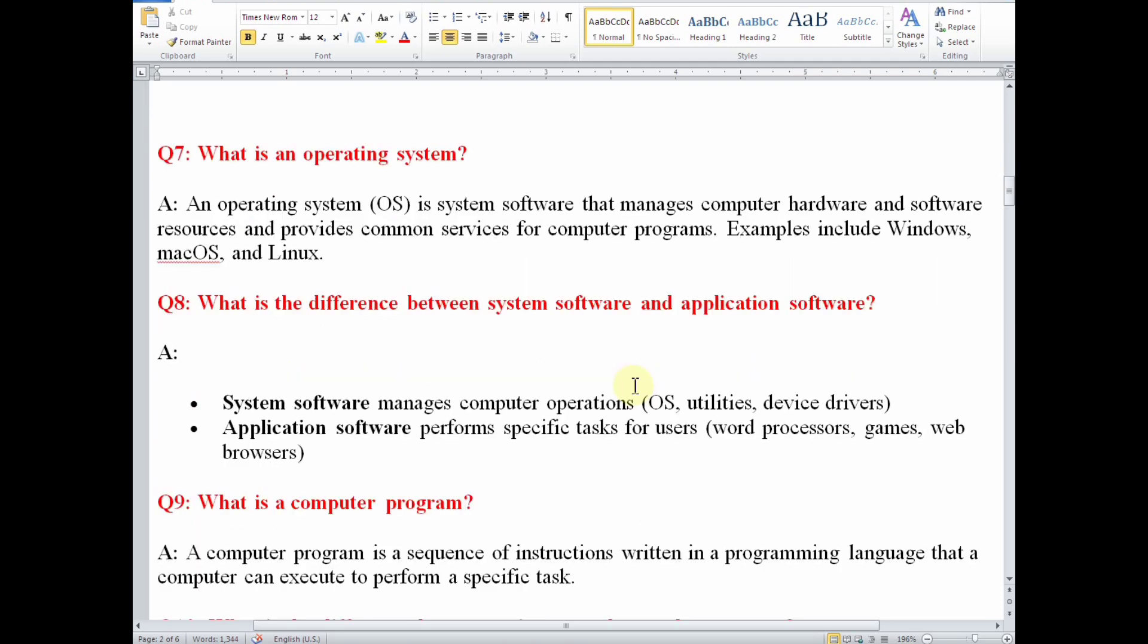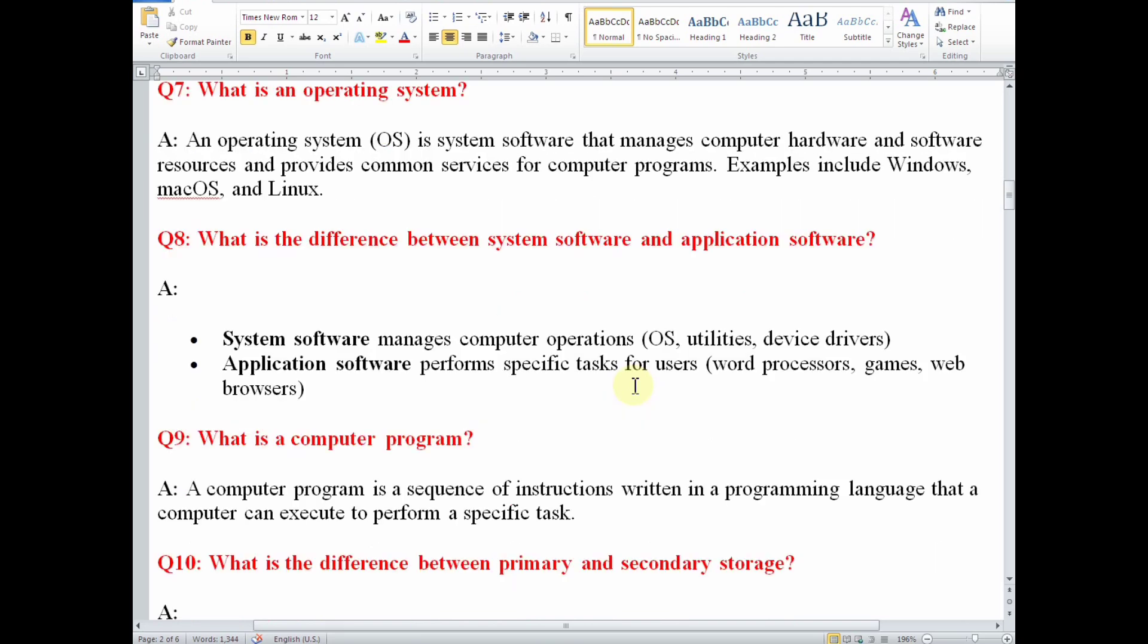Number eight, what is the difference between system software and application software? System software manages computer operations, such as OS, utilities, device drivers, etc. Application software performs specific tasks for users like word processors, games, web browsers, among other examples.